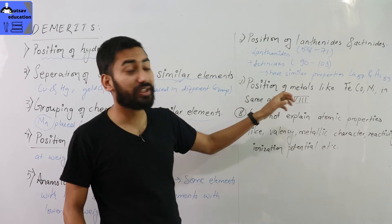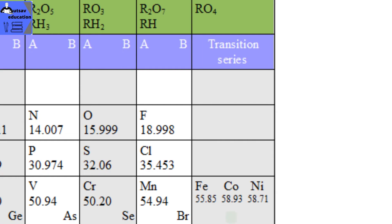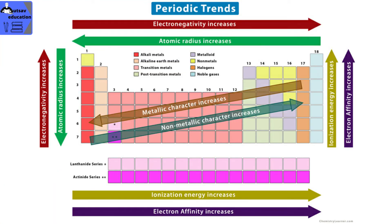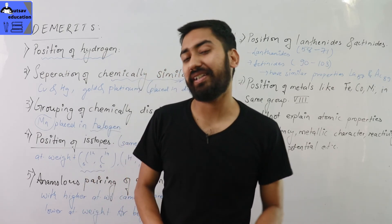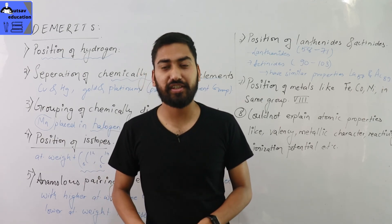Another demerit is the position of triads like Iron, Cobalt, and Nickel. These elements are placed together in a group, but in each group there are three elements with similar chemical reactivity, valence, and ionization potential. This arrangement is different from the modern periodic table. These are the demerits of Mendeleev's Periodic Table. What do you think about today's video? Leave a comment, like, share, subscribe and hit the bell icon. Stay home, stay safe, and see you in the next video. Goodbye.